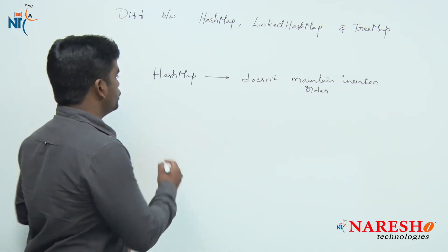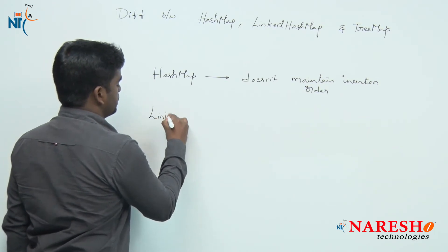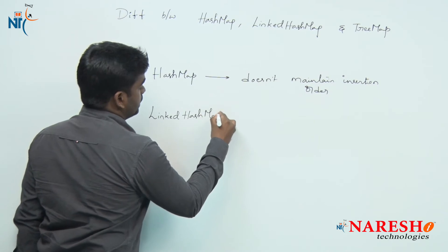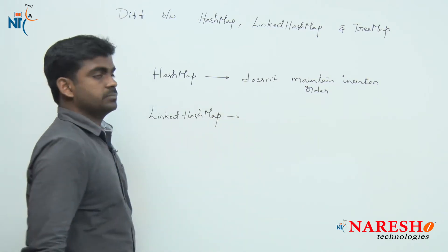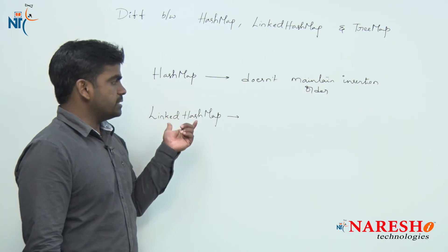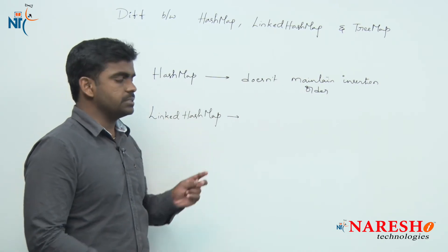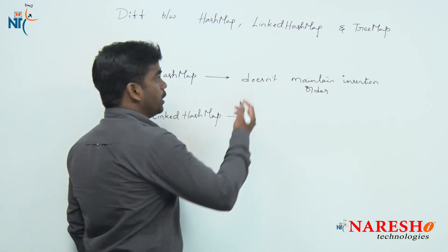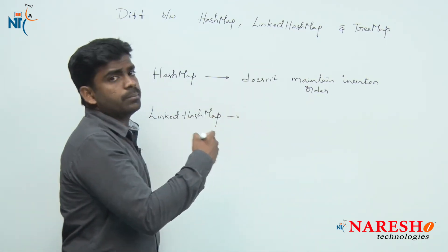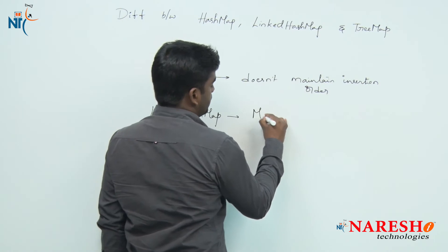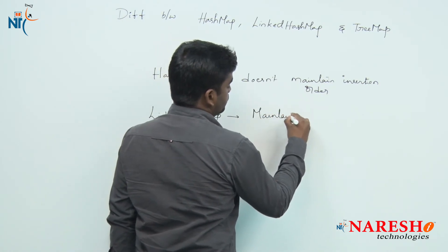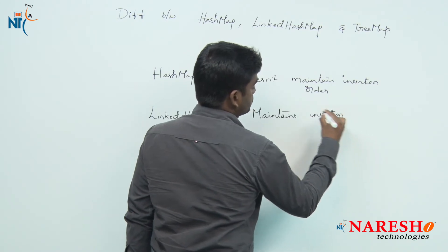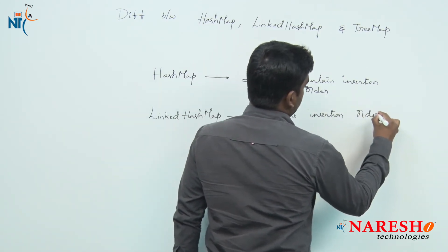If you want to maintain the insertion order, we should go for LinkedHashMap. The only difference between HashMap and LinkedHashMap is that LinkedHashMap will maintain the insertion order of elements along with the keys.